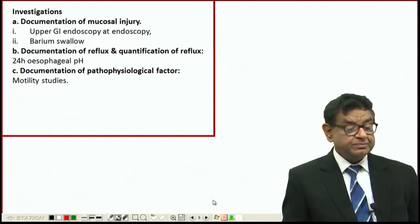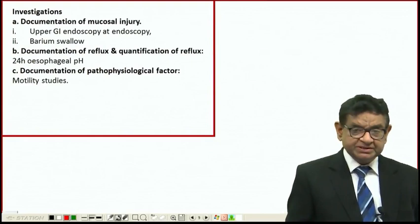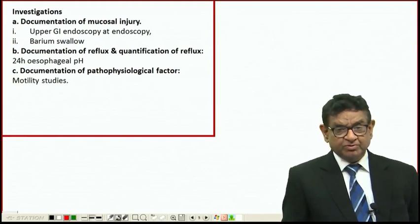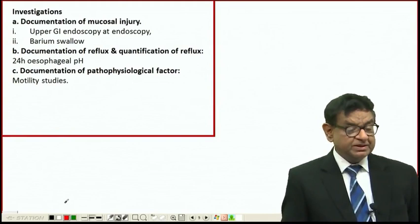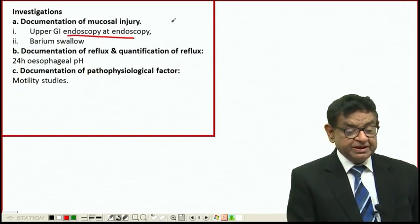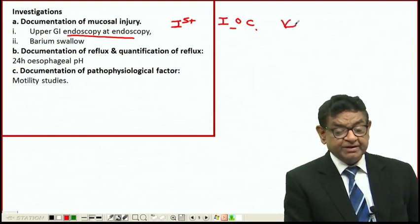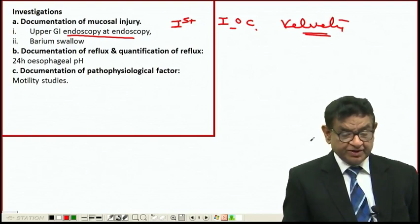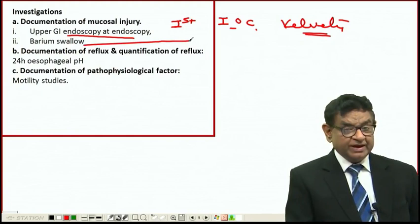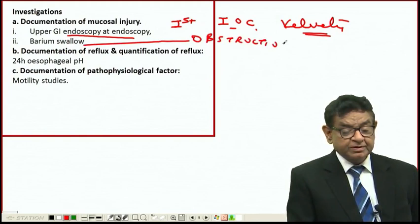We have a patient clinically suspected by history of GERD. How to investigate? First, we have to demonstrate mucosal injury. The first investigation is upper GI endoscopy, the investigation of choice. When we do endoscopy, we get a velvety appearance of the lower end of the esophagus. We can do barium swallow, especially when finding some obstruction.